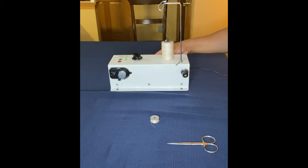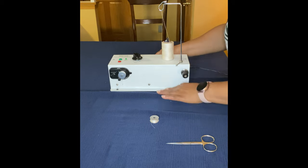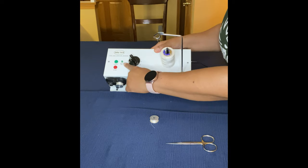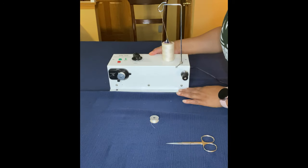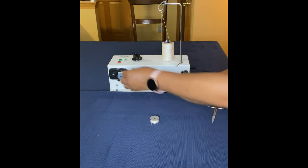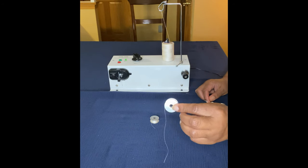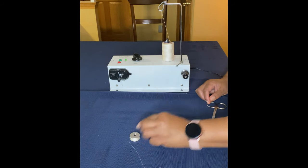Once the bobbin is full, it will stop automatically. Then you just cut your threads and you're ready to sew. It's just that quick and you can wind several bobbins to get yourself started. You don't have to keep stopping when you're sewing to wind up your bobbins.